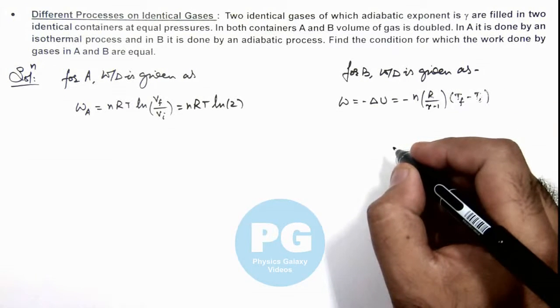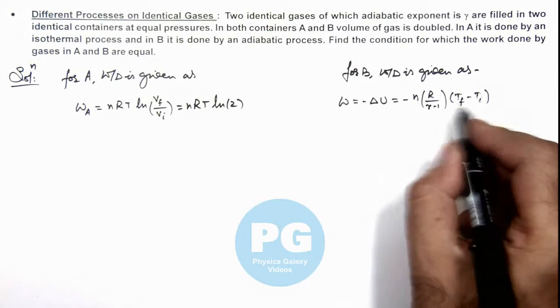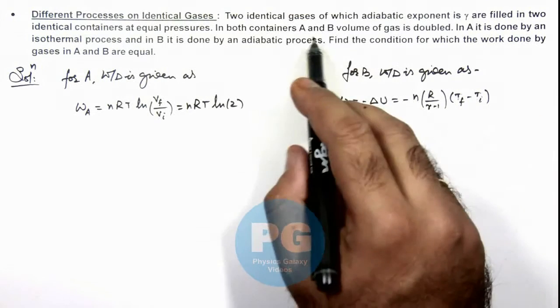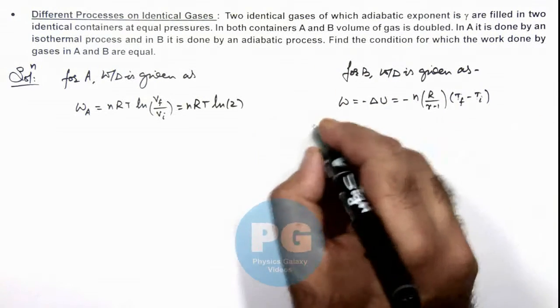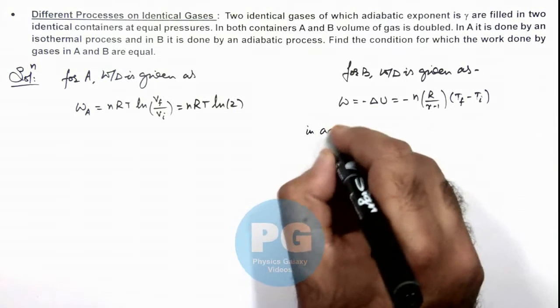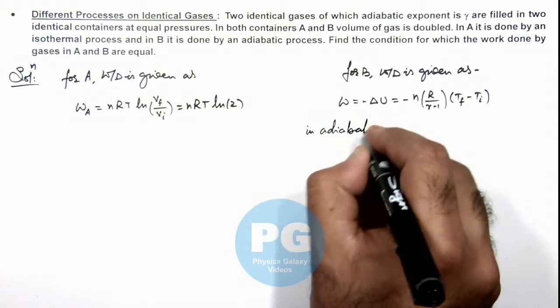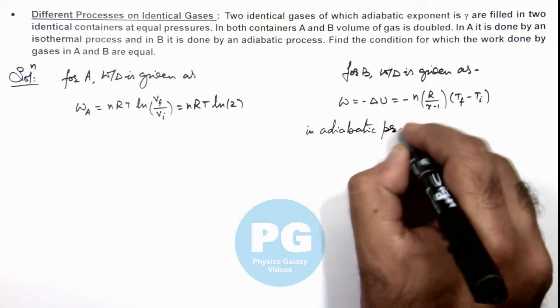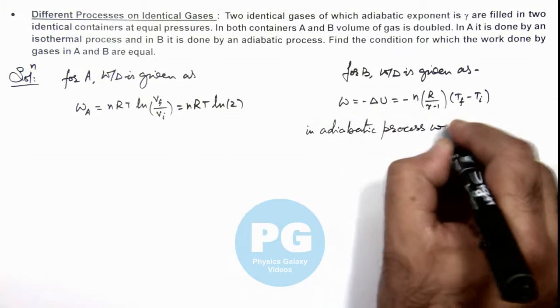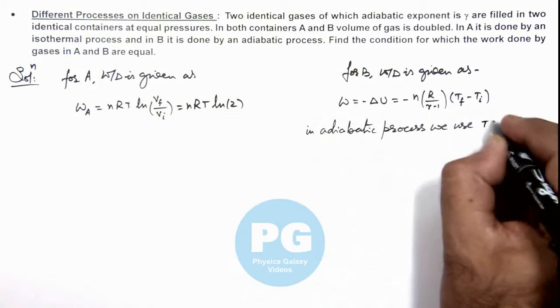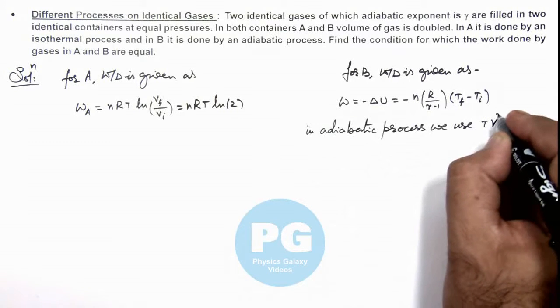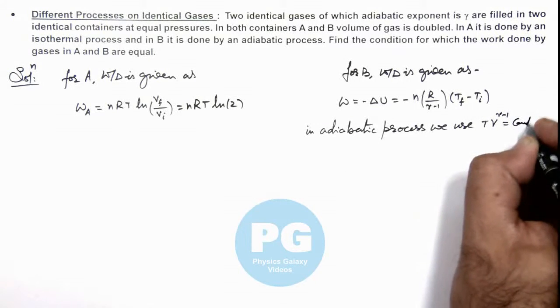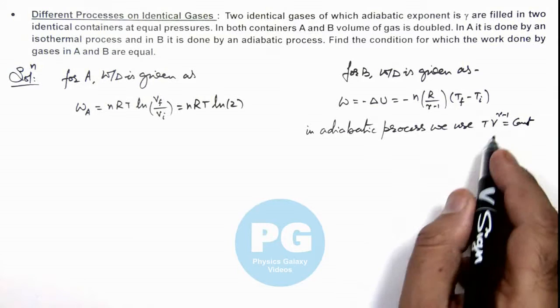So in this situation we can relate the temperatures when the volume is doubled. In adiabatic process we use T V^(gamma-1) is constant. And in this situation we can write T_initial V^(gamma-1) equals T_final multiplied by...